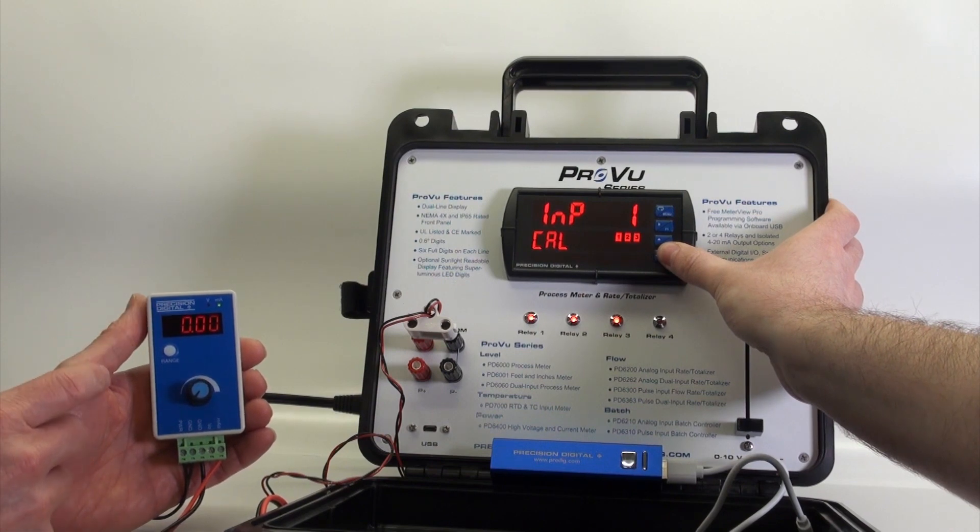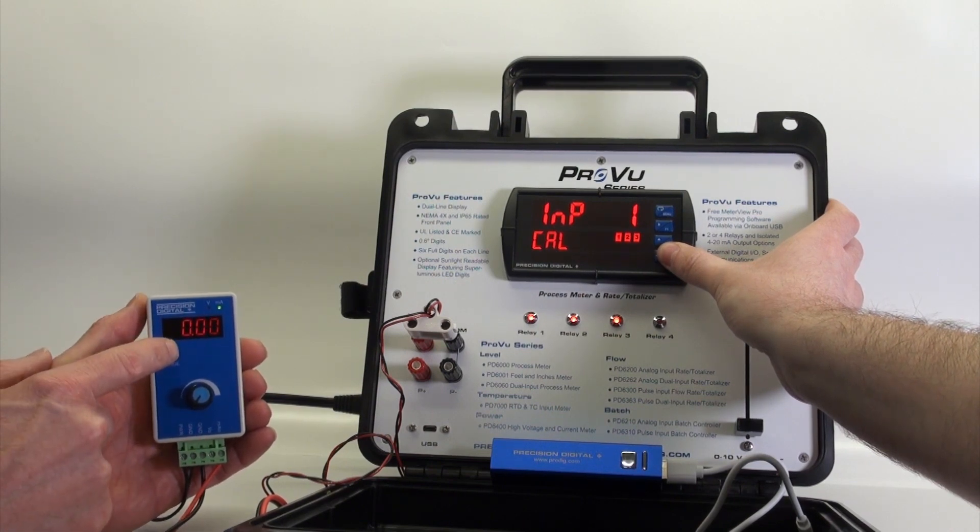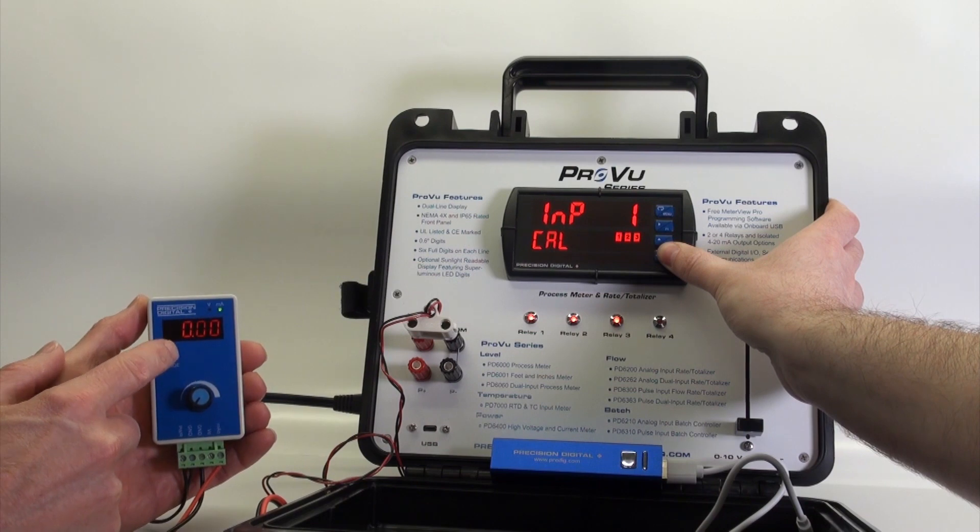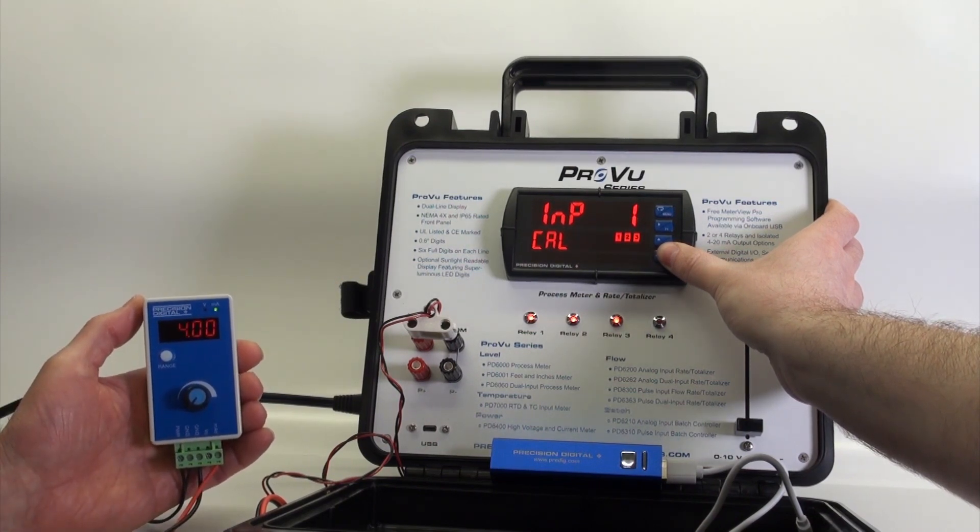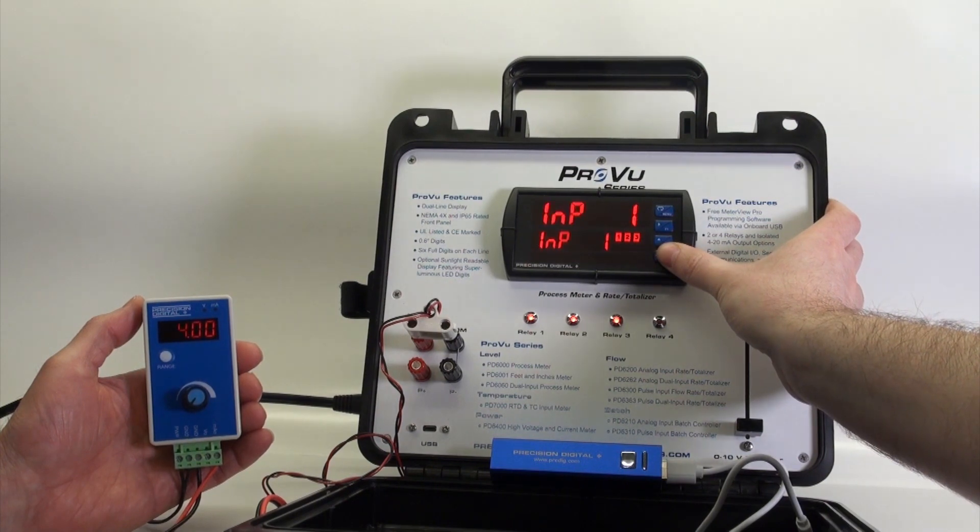Right now I have it set so it's showing 0 to 100%. If I press this button, it now shows 4 milliamps. So we're putting in 4 milliamps.